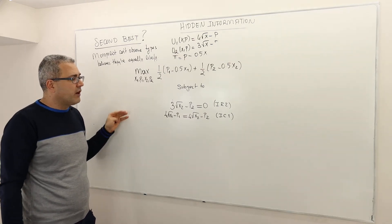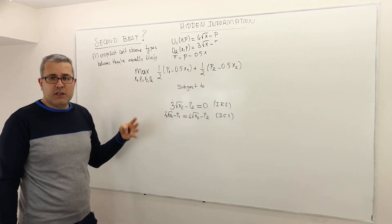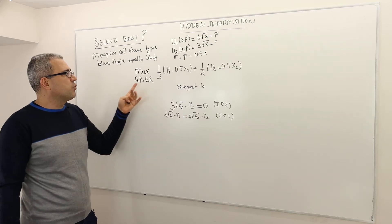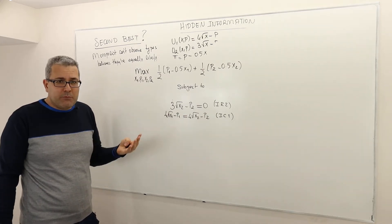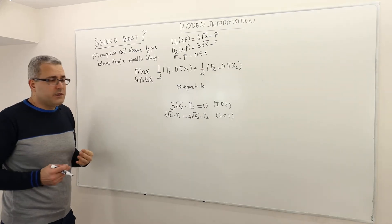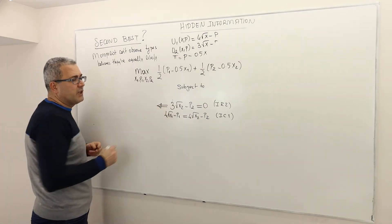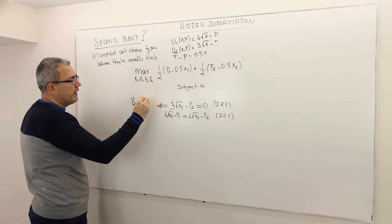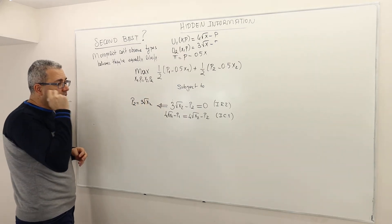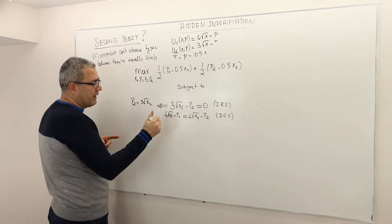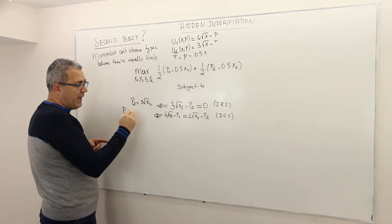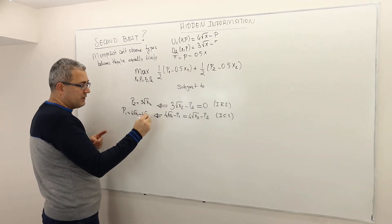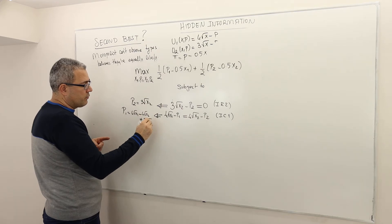How do we solve this? We can use the substitution method. By using the individual rationality constraint of type 2 with equality, we can write p2 equal to 3√x2. Then plugging back into IC1, we get p1 equal to 4√x1 minus 4√x2 plus p2, which equals 3√x2. So p1 equals 4√x1 minus √x2.